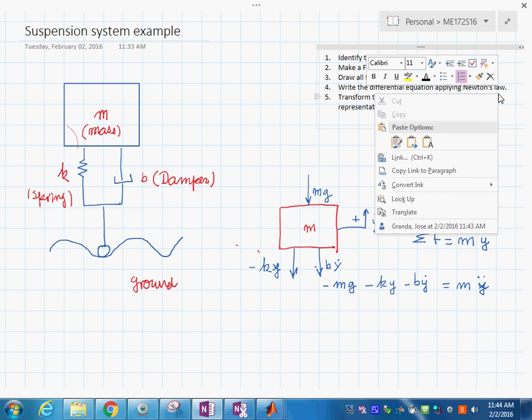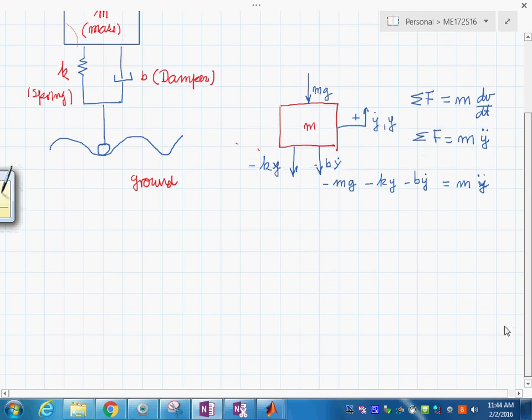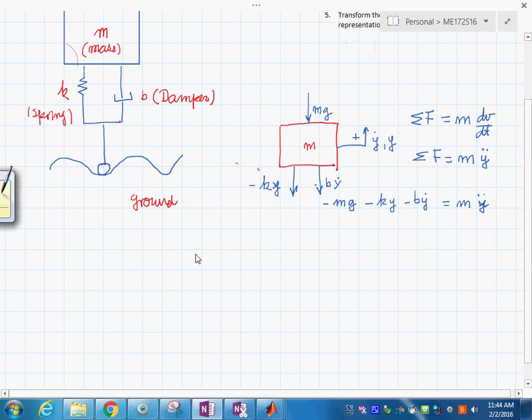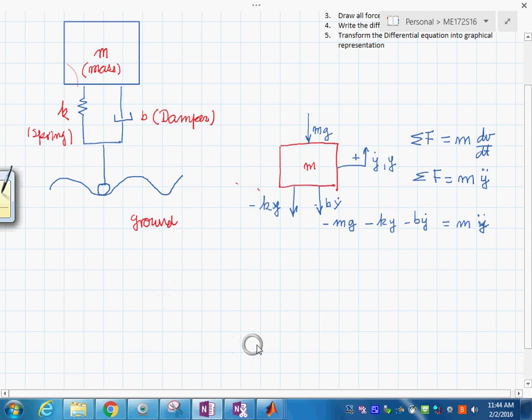Once we do this, we'll go over here and say we need to transform this into some graphical representation. We're going to draw it in this area here. So what we'll do is we say, look, this is a summation point.